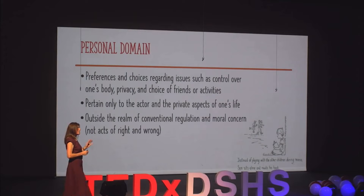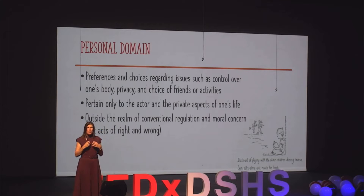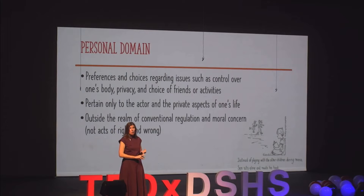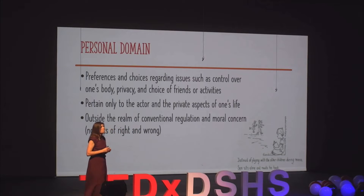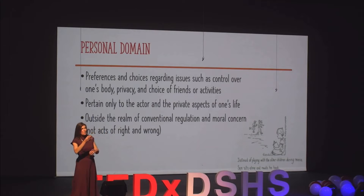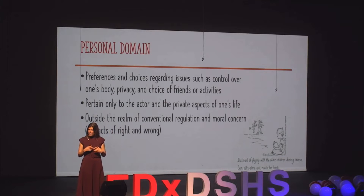The personal domain relates to an individual themselves — private actions that are just impacting them. This can be choices related to their body, social activities, or what they want to do in their free time. For example, Sam choosing to read a book instead of exercising, someone choosing to work on a Mac versus a PC, or choosing to wear sunglasses versus a sun hat. Individuals tend not to judge actions classified in this personal domain.